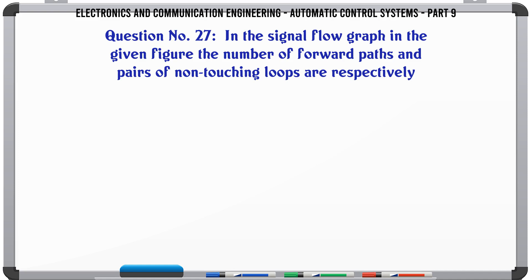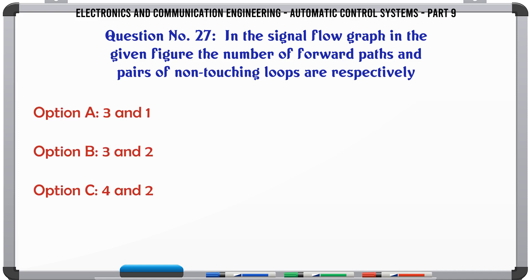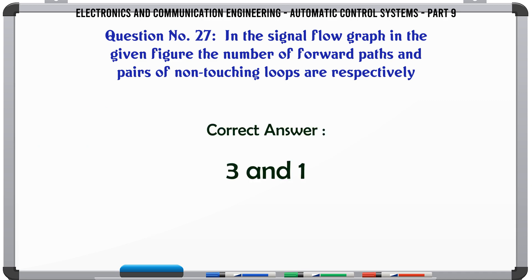In the signal flow graph in the given figure, the number of forward paths and pairs of non-touching loops are respectively: A. 3 and 1, B. 3 and 2, C. 4 and 2, D. 2 and 4. The correct answer is: 3 and 1.